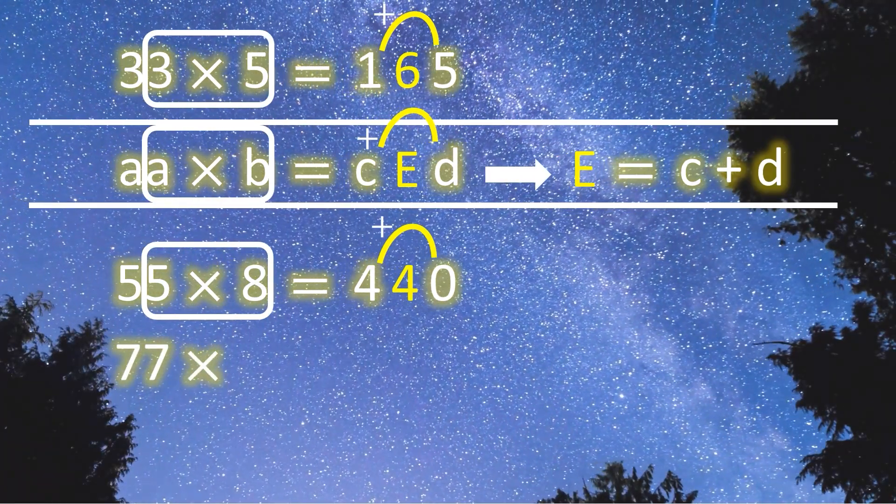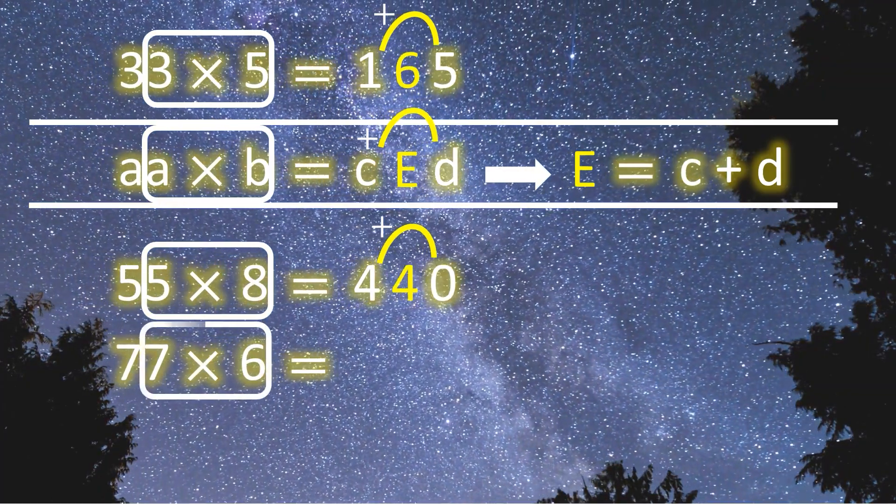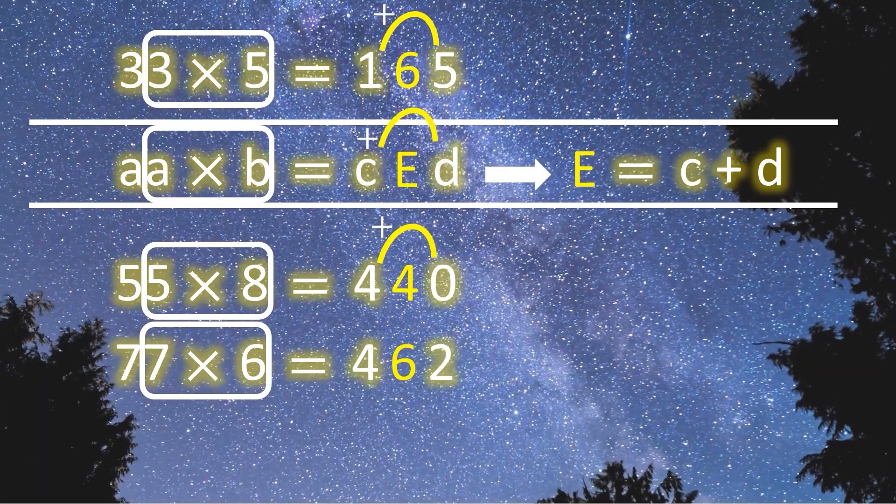Another example is 77 times 6. Just as before, 7 times 6 equals 42. Add 4 and 2, and you get 462.